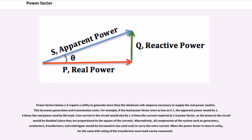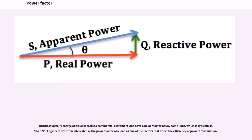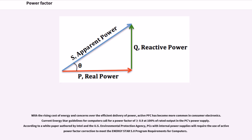Power factors below 1.0 require utilities to generate more than the minimum volt amperes necessary to supply the real power, increasing generation and transmission costs. For example, if the load power factor were as low as 0.7, the apparent power would be 1.4 times the real power used by the load, and line current in the circuit would also be 1.4 times the current required at 1.0 power factor, so the losses in the circuit would be doubled. All components of the system such as generators, conductors, transformers, and switchgear would need to be increased in size to carry the extra current. When the power factor is close to unity, for the same KVA rating of the transformer more load can be connected. Utilities typically charge additional costs to commercial customers who have a power factor below some limit, which is typically 0.9 to 0.95. Engineers are often interested in the power factor of a load as one of the factors that affect the efficiency of power transmission.